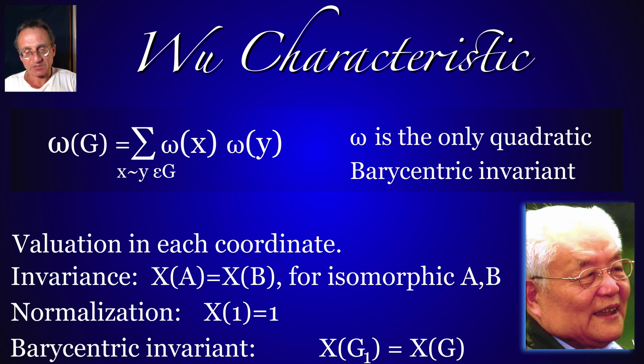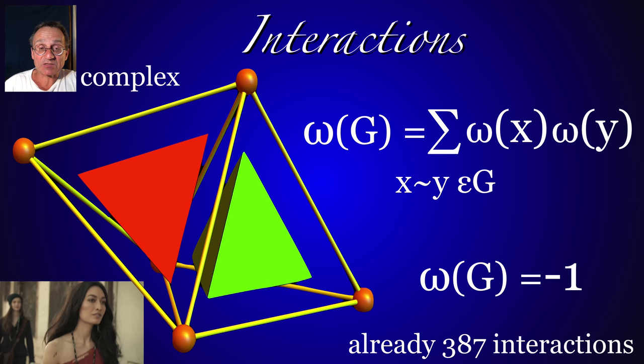Now there's a connection calculus, kind of a different type of calculus. When you look, instead of the Euler characteristic, you look at the quadratic valuation, which is the Wu characteristic. It's the only barycentric invariant valuation, quadratic one. And it has been studied the first time 60 years ago. Not so much.